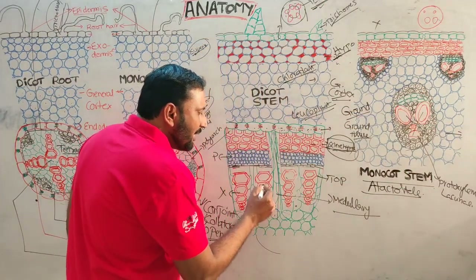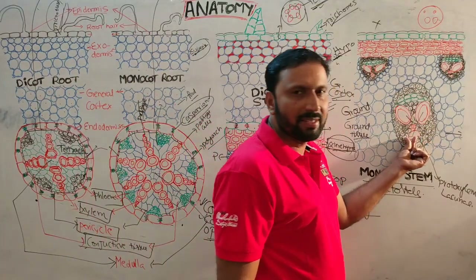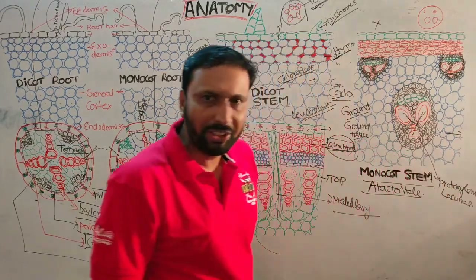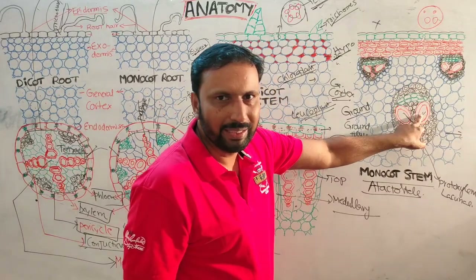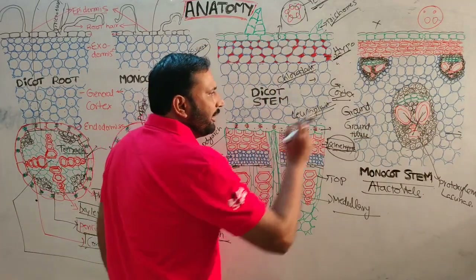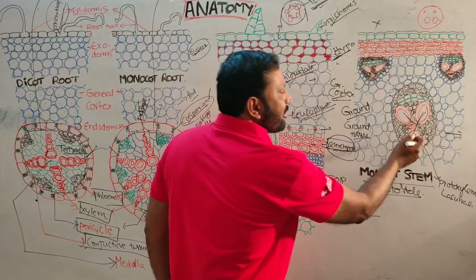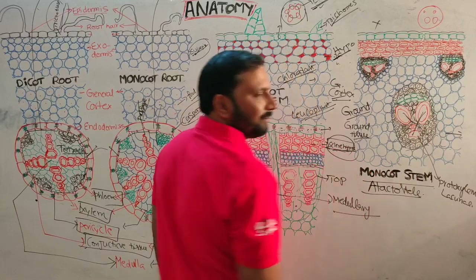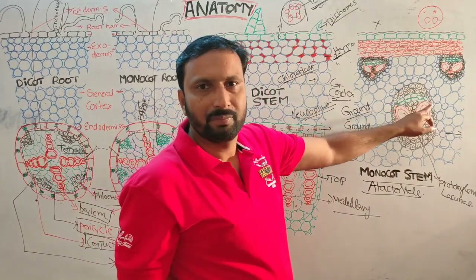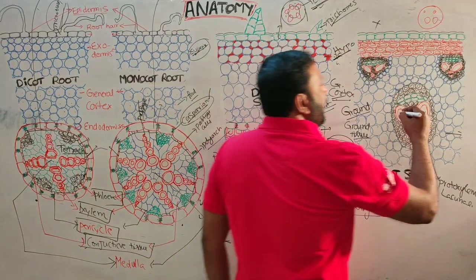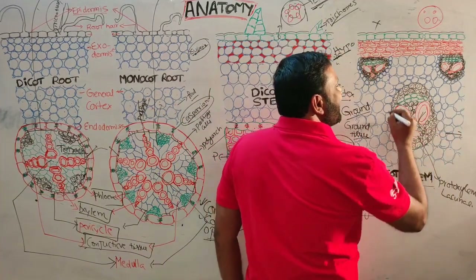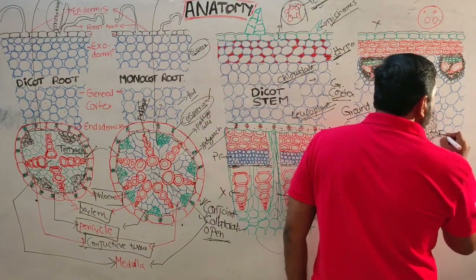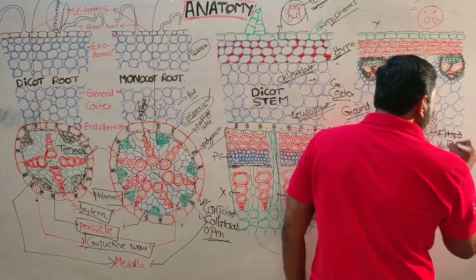In monocot stem, there are more xylem vessels, while in dicot stem there are fewer. In monocot stem, four xylem vessels are arranged in a Y-shape: protoxylem and metaxylem. Both dicot and monocot stems have conjoint collateral vascular bundles, but monocot stem is closed because there is no cambium. Each monocot vascular bundle is surrounded by sclerenchyma cells, hence called fibrovascular bundles.